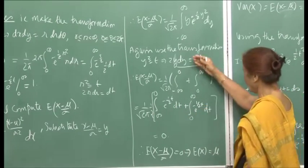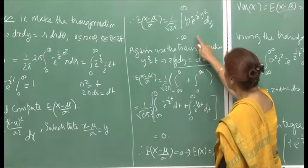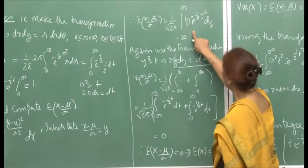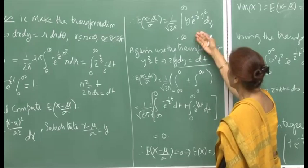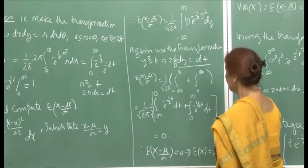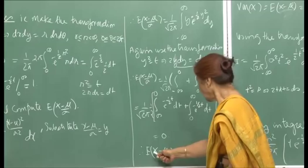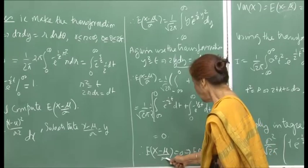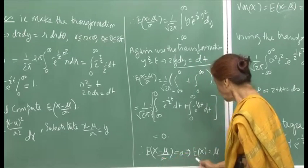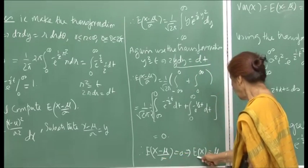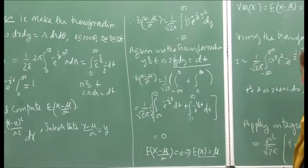I just showed you the steps, in case you were not very sure, but otherwise we could have concluded our computation at this step only, and said that this is equal to 0. Since this is 0, expectation of (x − μ)/σ equals 0. Since σ is a constant and goes out, this implies that the expectation of x is equal to μ.